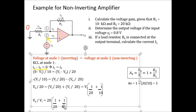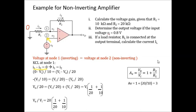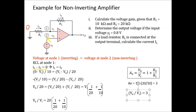Hopefully you can identify the configuration straight away. For part two, since the gain is 3, calculate vout: vout = Av × vi = 3 × 0.8 = 2.4 V.